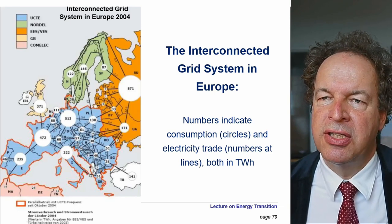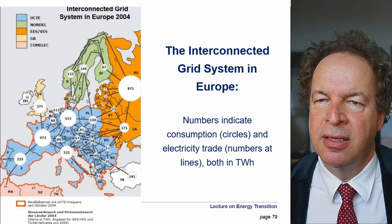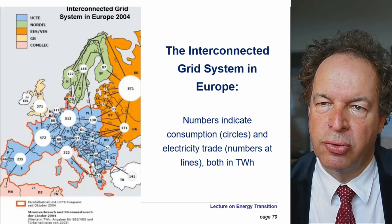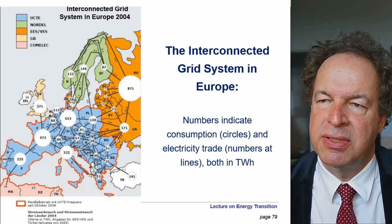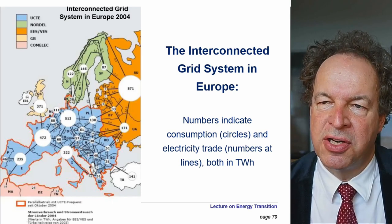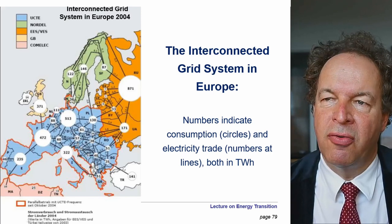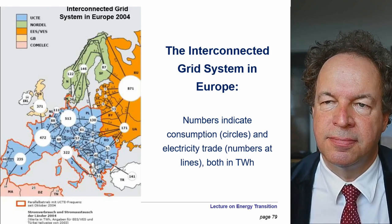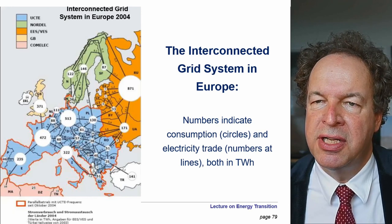Not only inside Germany, there is a whole European interconnection, which is very helpful. On a large scale, you can profit from different time zones — Portugal has a two-to-three-hour time difference from Germany — meaning different availability of sunshine. Different wind availability across regions can also be balanced through the European grid. The numbers shown in terawatt hours indicate the energy interchange happening during one year.